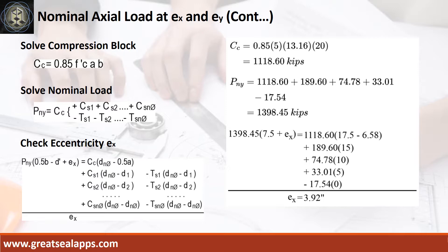By summing up all the forces, the nominal axial load at the Y-axis is 1,398.45 kips. Follow the computations below for final check of eccentricity at EX equals 3.92 inches.